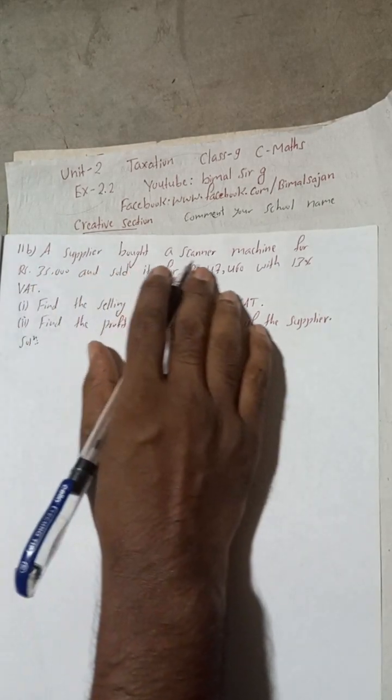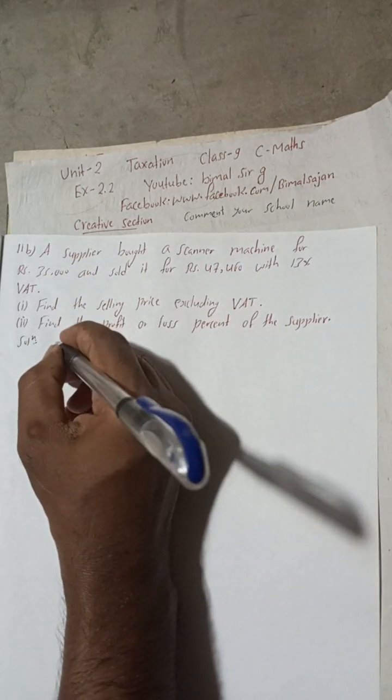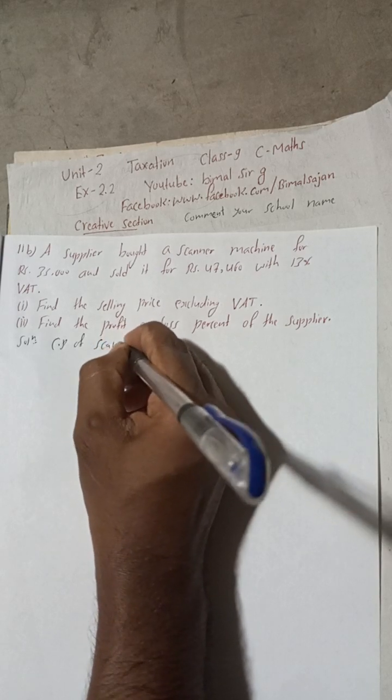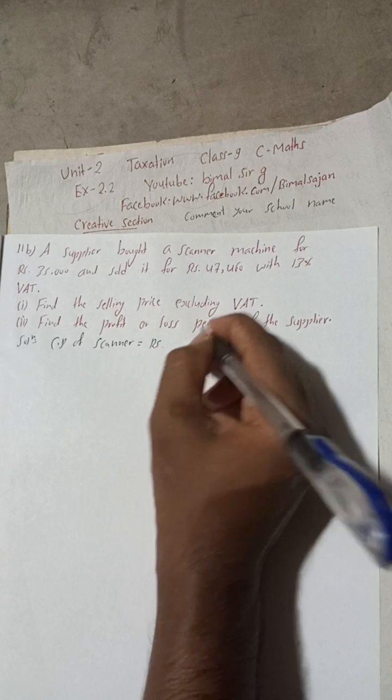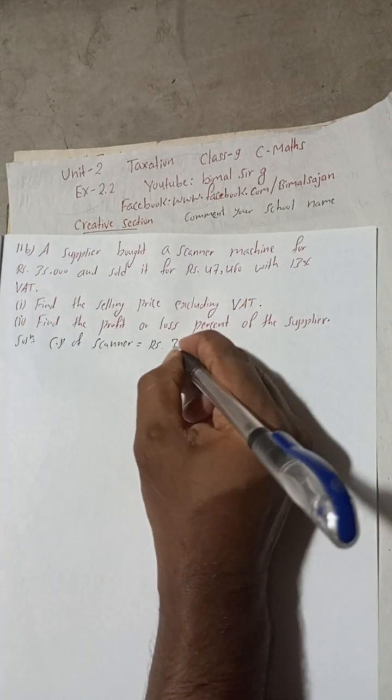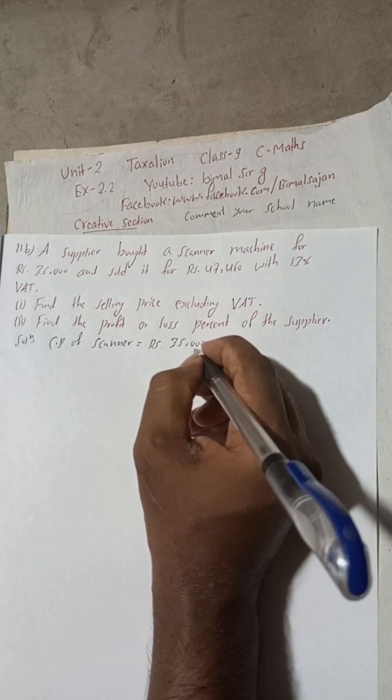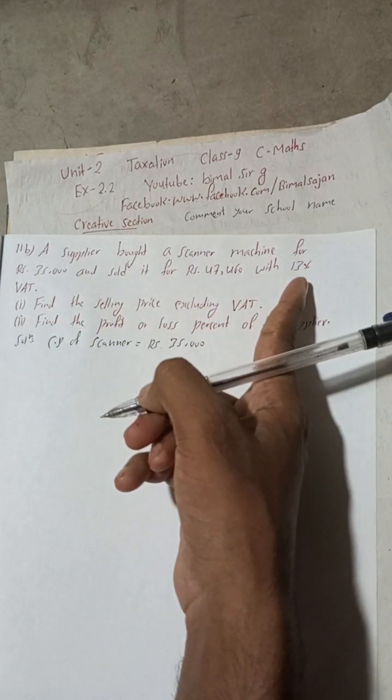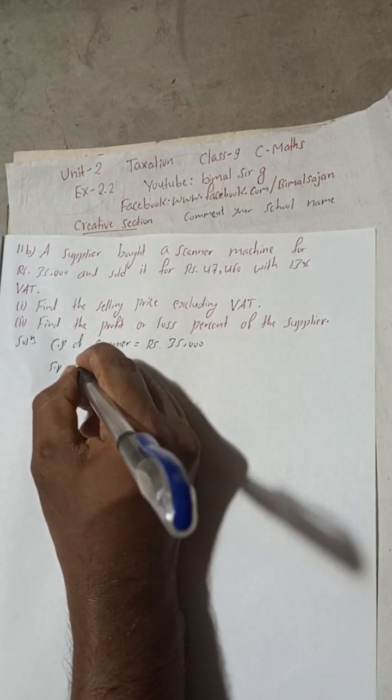So now, a supplier bought. 'Bought' means this is the cost price. Cost price of machine scanner, so CP of a scanner is equal to Rs. 35,000. Now this is the 'sold it for Rs.' with 13% VAT, so this is SP, SP of a scanner.